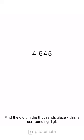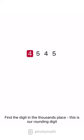Find the digit in the thousands place. This is our rounding digit. Look right next door. The next door digit is 5.